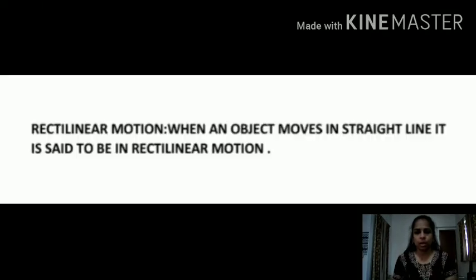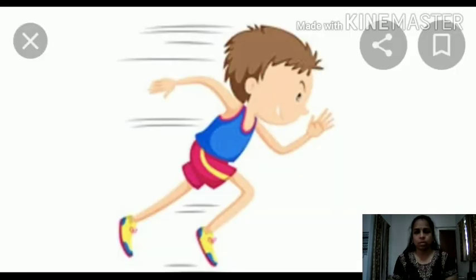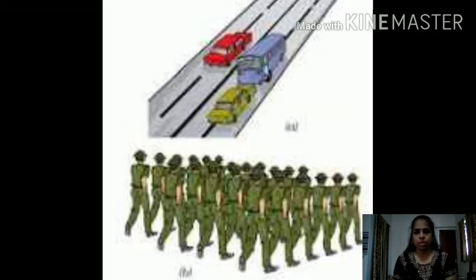The first one is rectilinear motion. When an object moves in a straight line, it is said to be in rectilinear motion. For example: a boy running in a straight path, marched past by soldiers, motion of a bull or cart moving on a straight line, and motion of a horse pulling the cart.